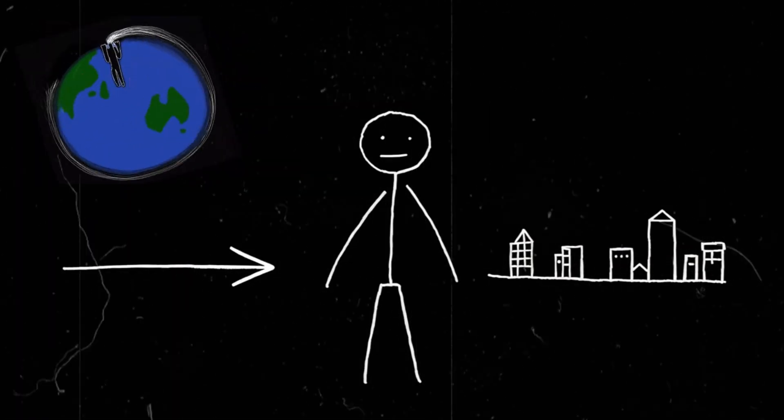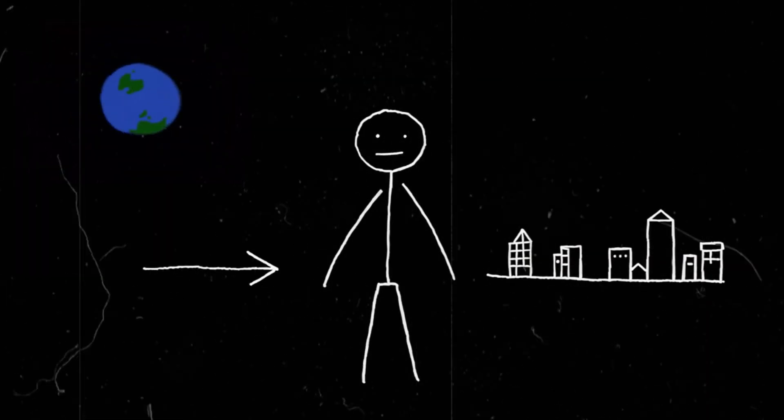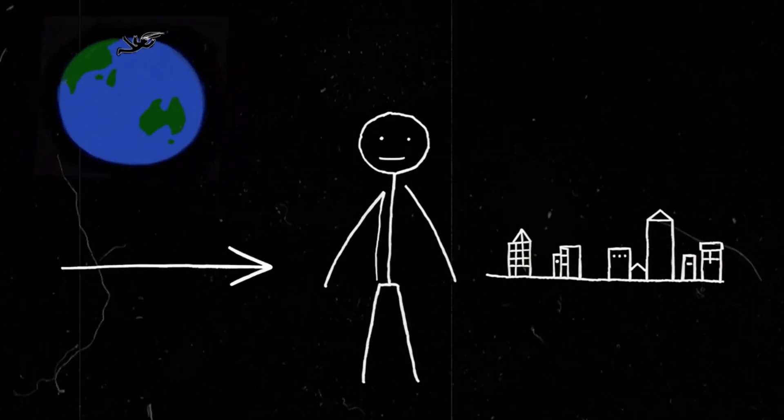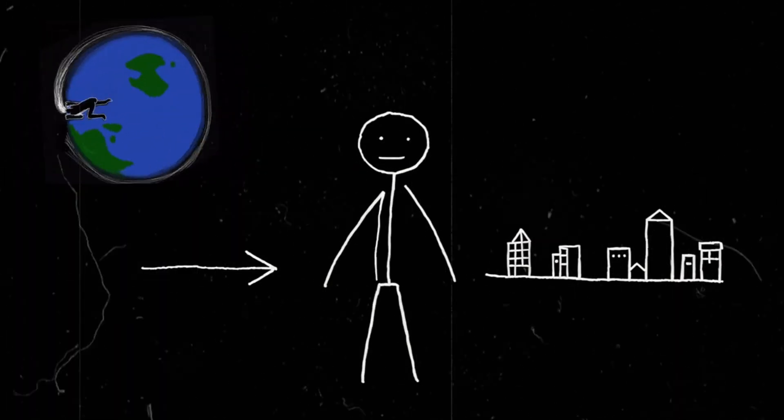You don't feel its spin because everything—air, oceans, buildings, you—is moving along with it. But if you outrun that spin, you're now moving relative to Earth's rotation.